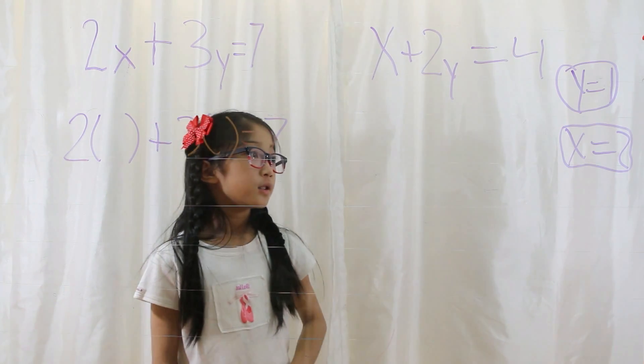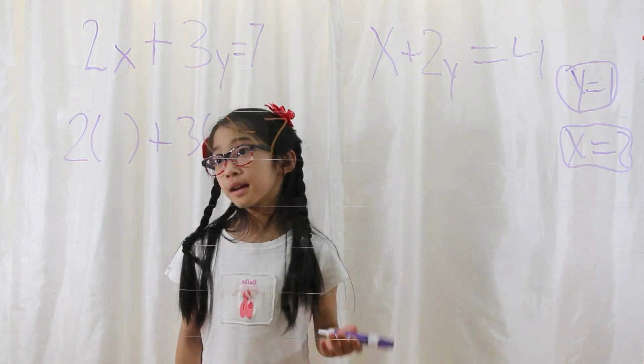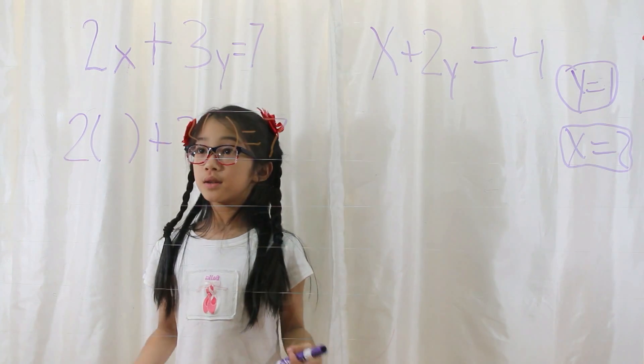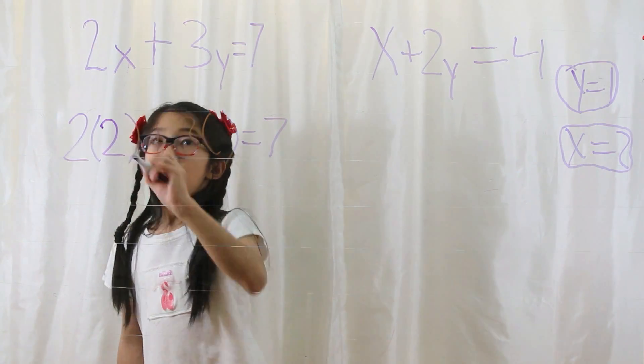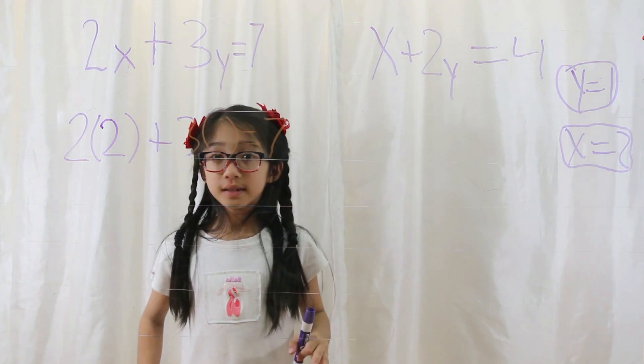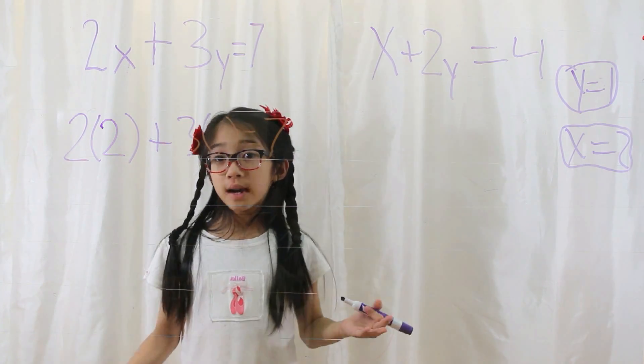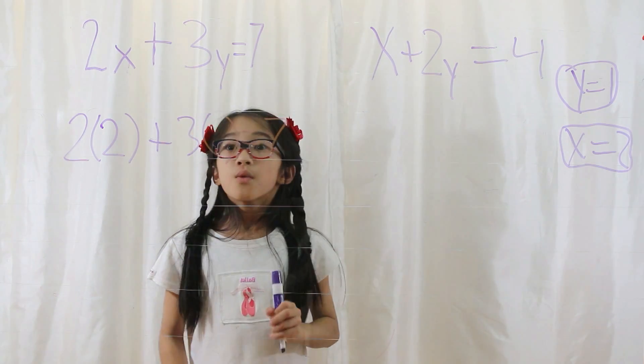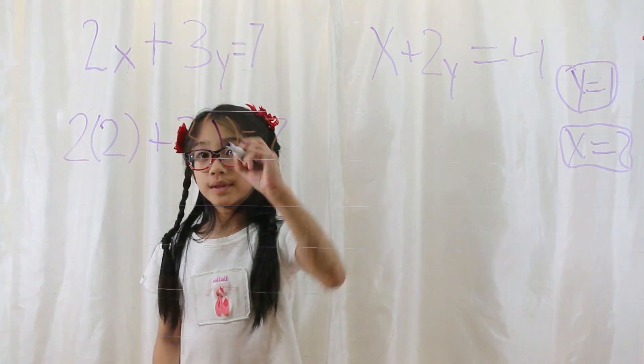So in the x parentheses, you'd put a 2, because x is equal to 2. And then what goes in the y parentheses? Well, since y is equal to 1, 1 would go in the y parentheses.